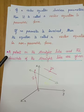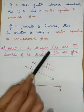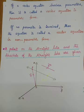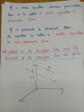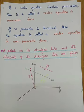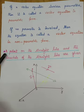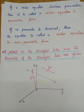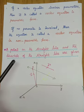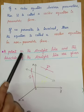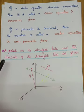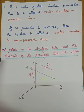The first condition we take is: a point on the straight line and the direction of the straight line are given. That means the straight line passes through a point and is parallel to one vector. So, one passing point and one parallel vector are given. We are going to find the parametric, non-parametric, and Cartesian forms of the vector equation.